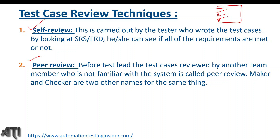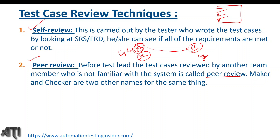The second type is peer review. Before the test lead reviews them, the test cases are reviewed by another team member who is not familiar with that module — this is called peer review. For example, Tester A works on Module X and Tester B works on Module Y. Tester A's test cases are reviewed by Tester B and vice versa. Since they are at the same level, this is peer review. 'Maker and checker' are other names for the same thing.